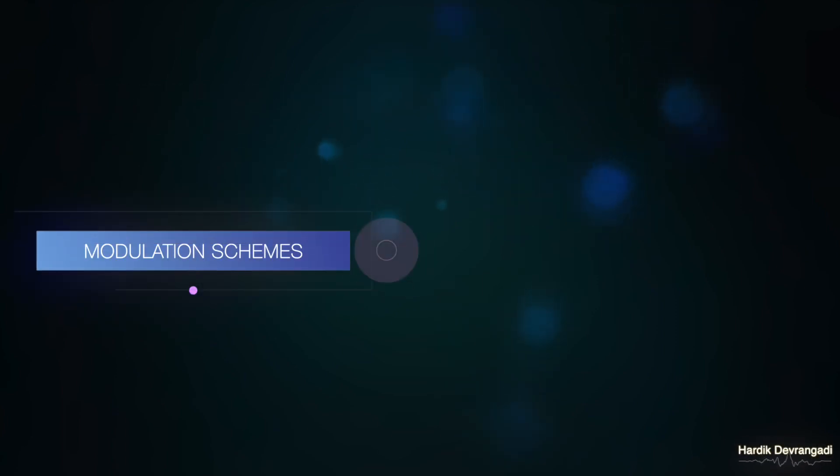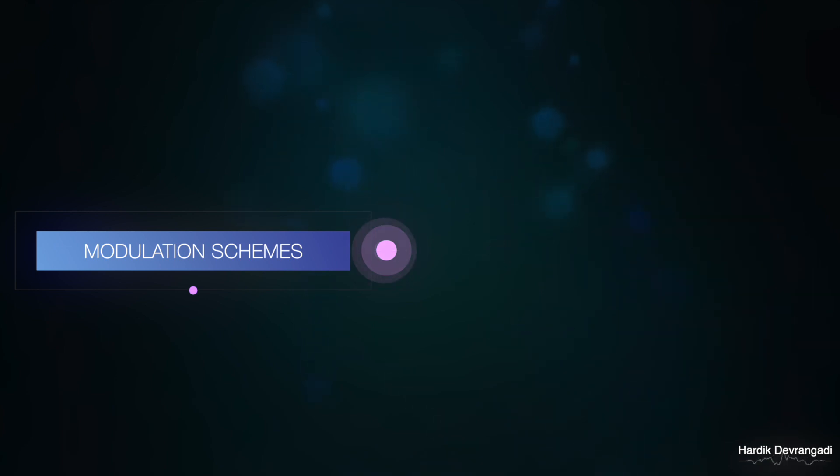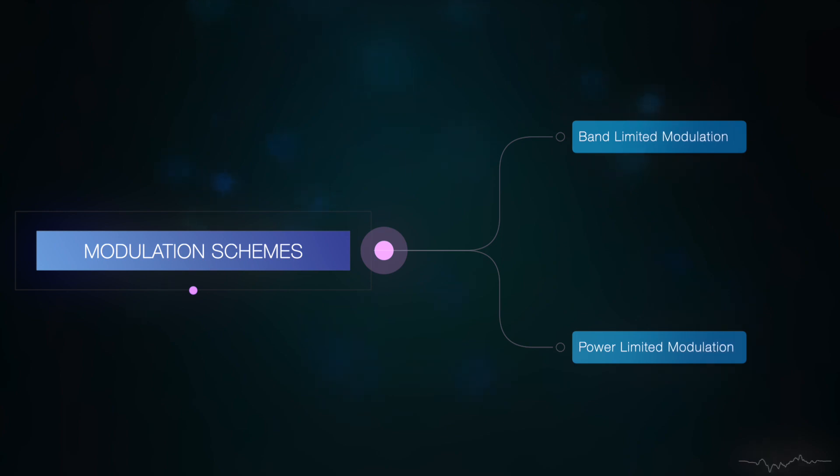There are three types of digital modulation schemes: amplitude shift keying, also known as ASK; phase shift keying, also known as PSK; and frequency shift keying, also known as FSK. These can be broadly classified into two categories: band limited and power limited modulation techniques.